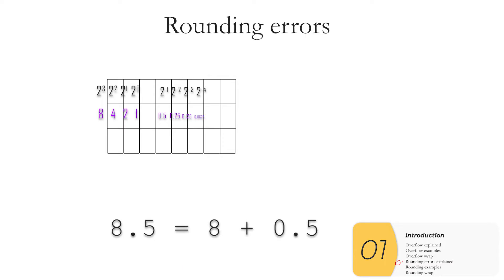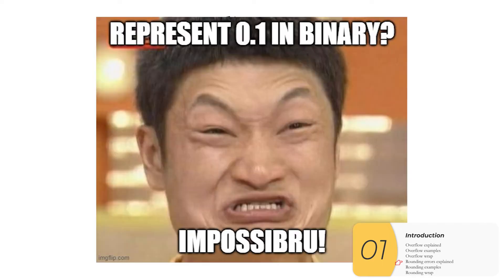So if we have a number like 8.5, this works really well. I can write 8.5 as 8 plus 0.5, and I can represent this in binary cleanly. But what if I have something like 0.1?